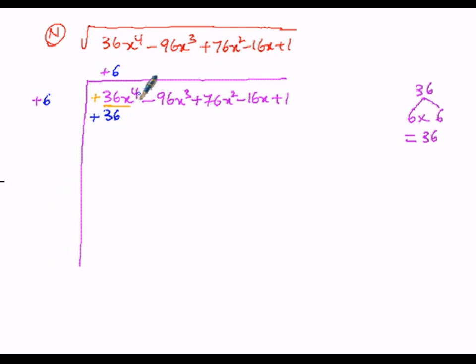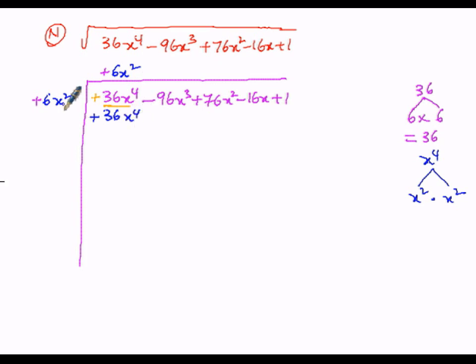Here x to the power of 4 can be split as x squared times x squared. So we can write it as x squared into x squared. You have to multiply these two: 6 into 6 is 36, and x squared into x squared is x to the power of 4. Add up the exponents: 2 plus 2 is 4.